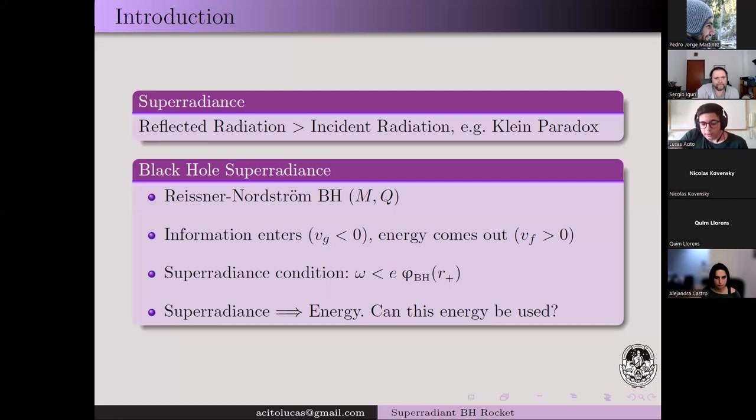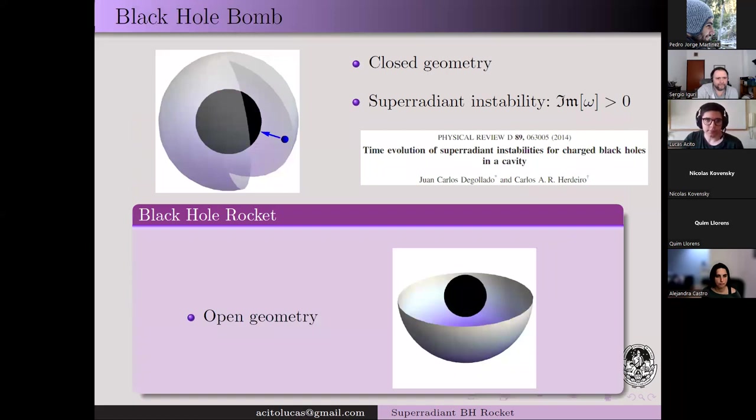To sum up, superradiance is a process of energy extraction from a black hole. Can this energy be used? One answer is the black hole bomb, where a black hole is surrounded by a perfect mirror—a spherical mirror—where the energy coming out from the black hole due to superradiance is reflected. This configuration is unstable since any superradiant mode will lead to an exponential growth of the energy density and pressure inside the mirror, and then it will collapse, giving rise to the name black hole bomb.